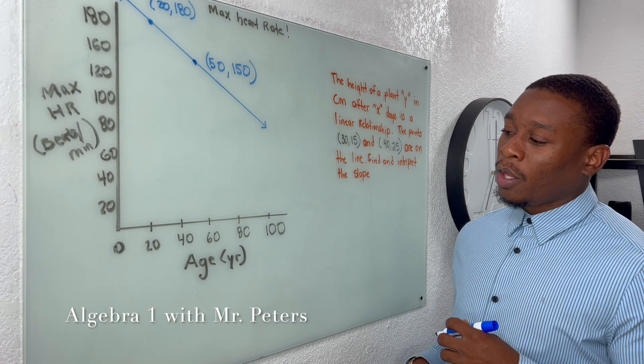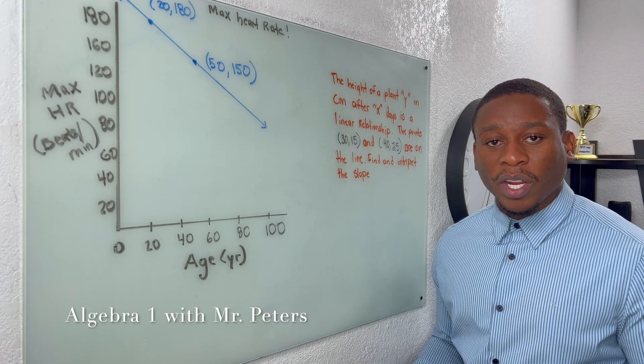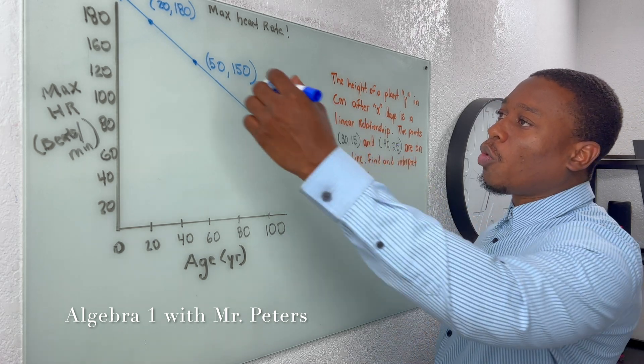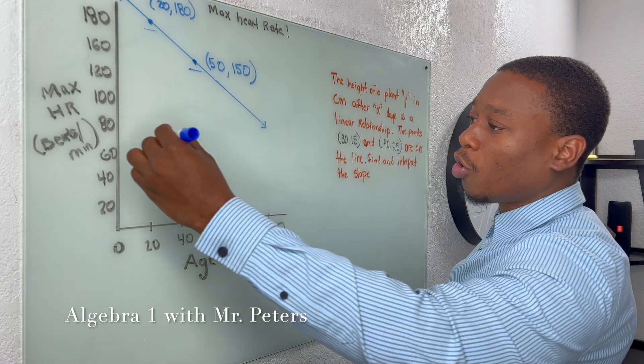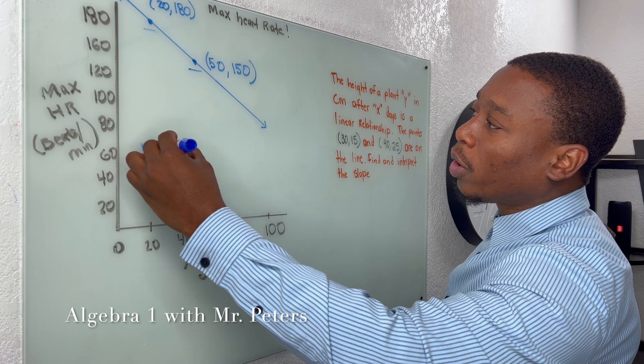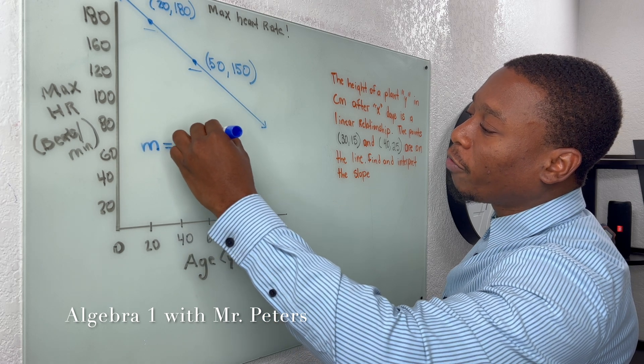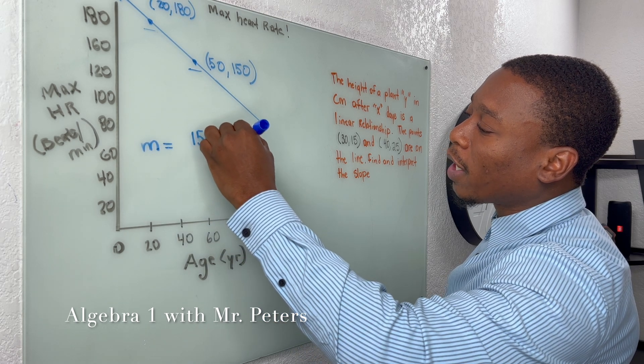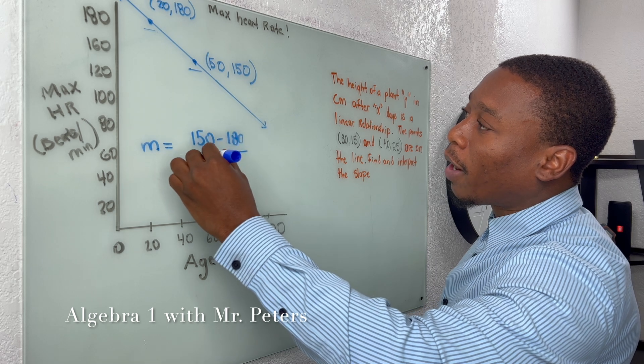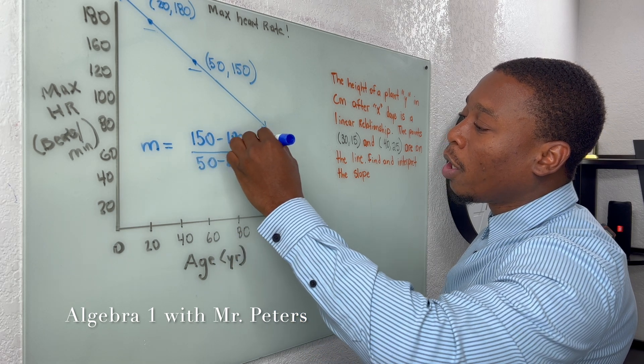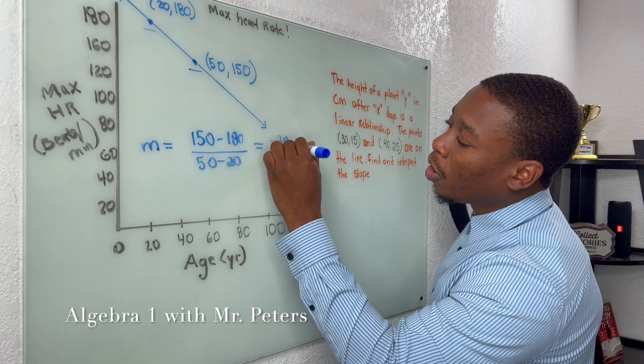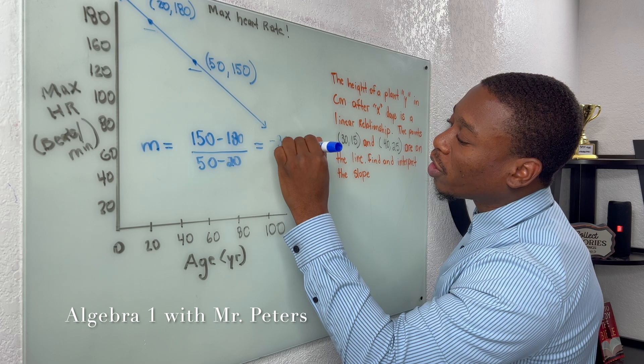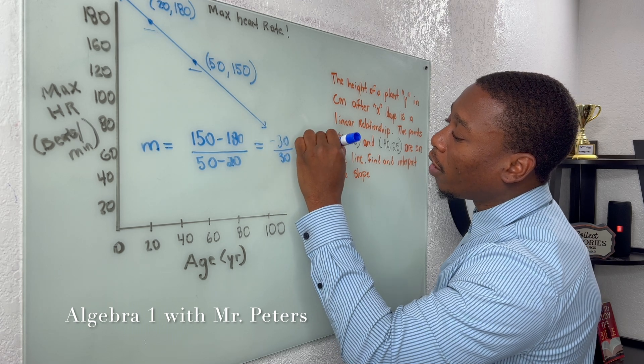So problem number one, we're talking about maximum heart rate and age. When we look at the two points that they give us, we first have to find the slope. Once we set the equation up, we'll have 150 minus 180, all divided by 50 minus 20. And when we simplify, we're going to get negative 30 over positive 30, which is equal to negative one.